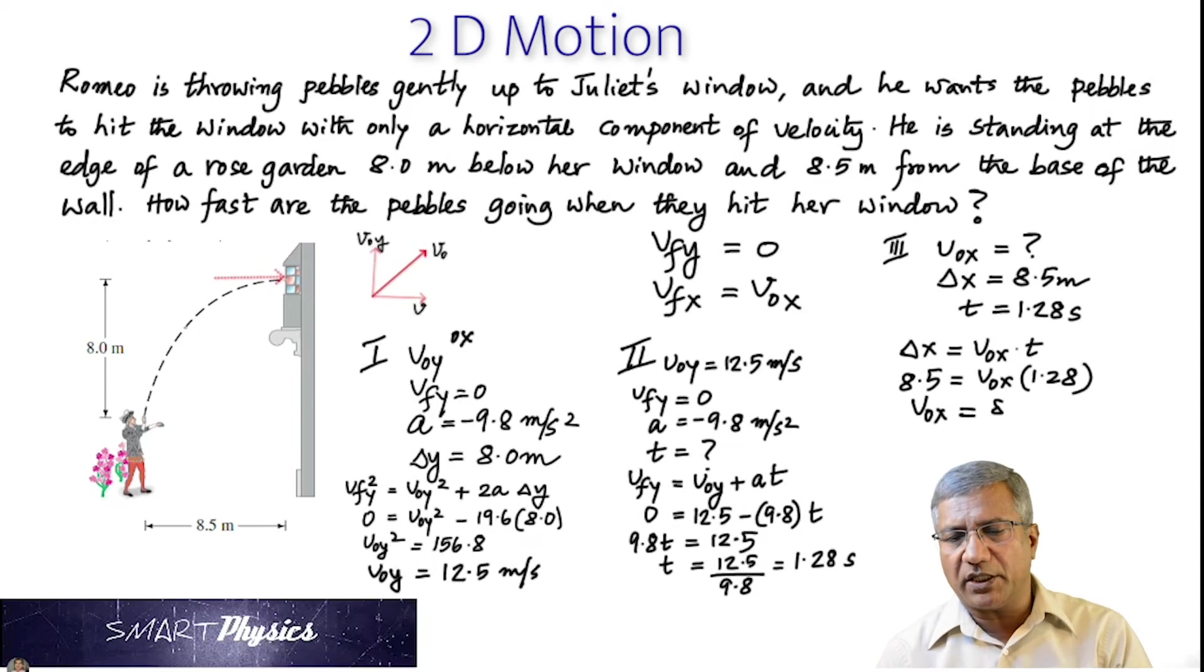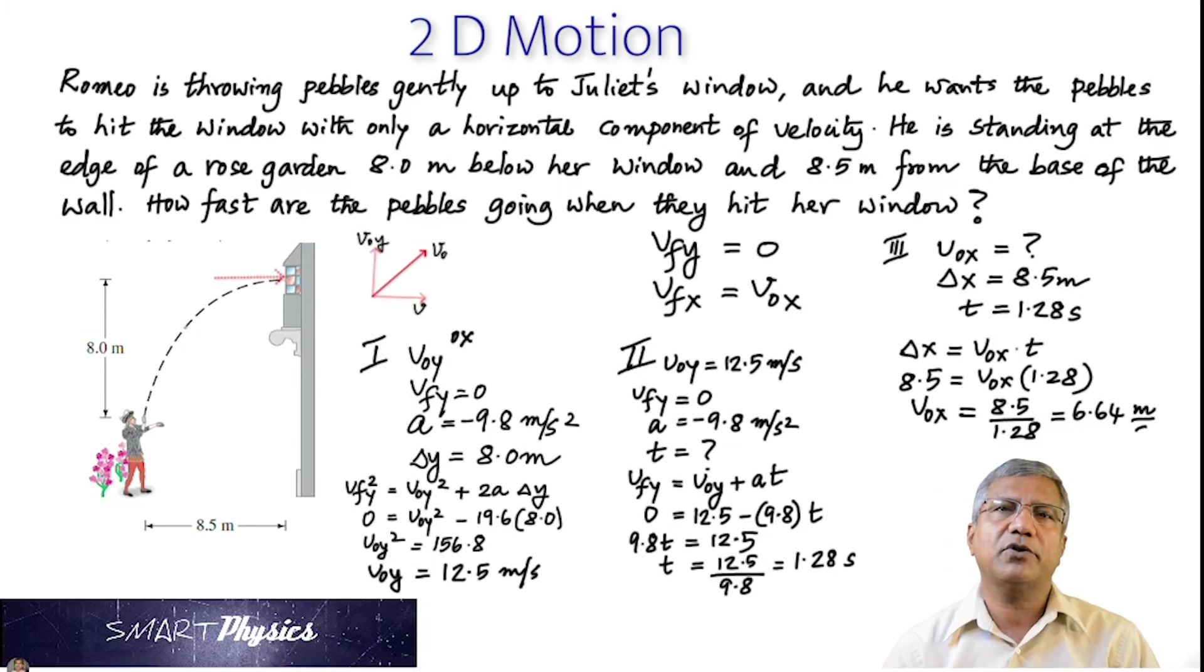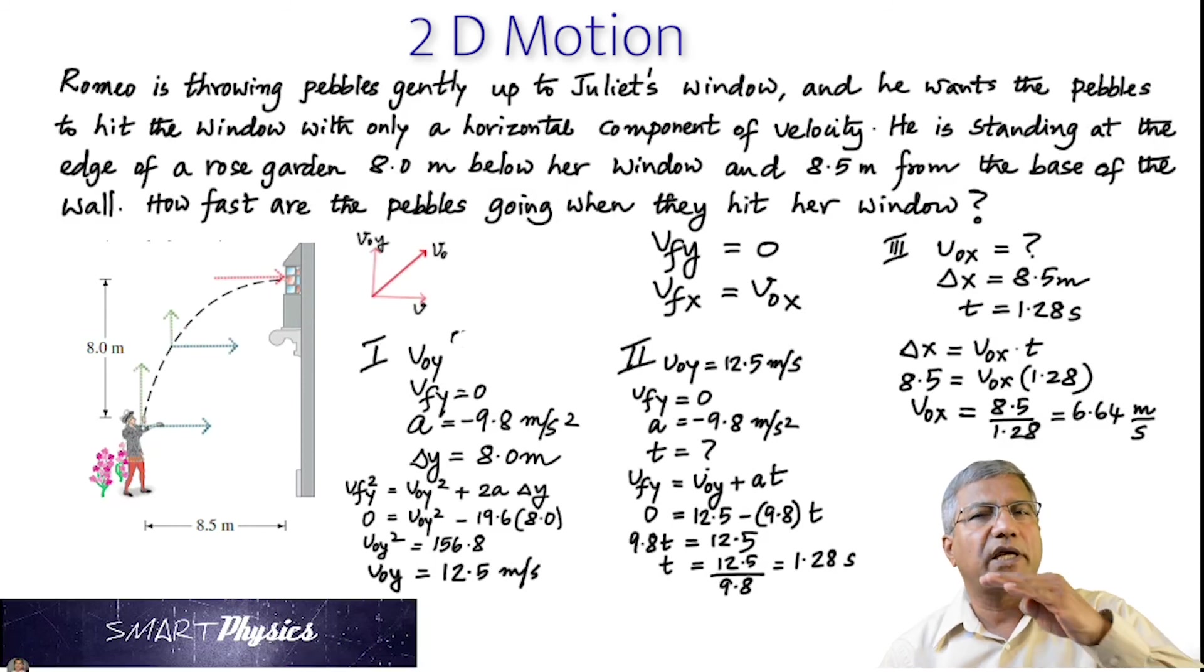V0X. Rearrange, you would get V0X is 8.5 divided by 1.28. So that gives the answer. That gives the answer 6.64 meter per second. Now that's the initial X velocity.